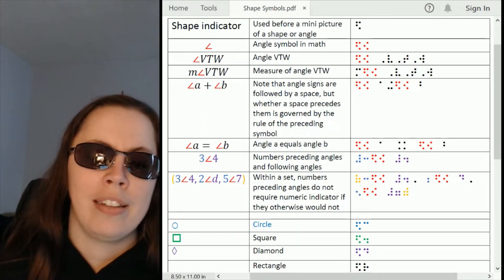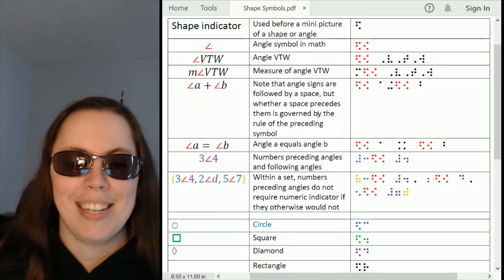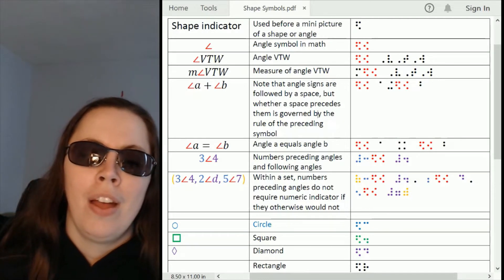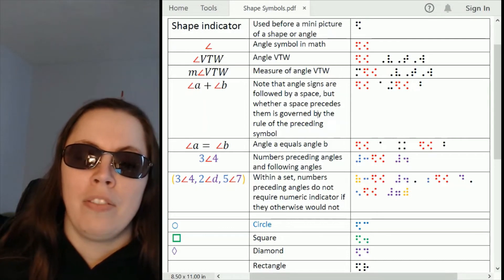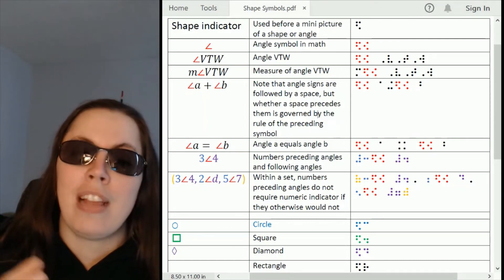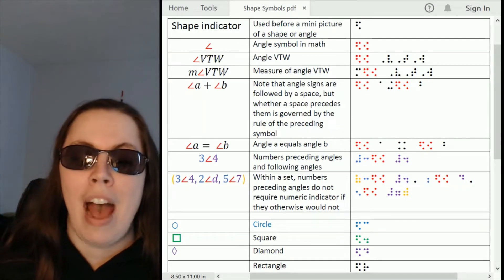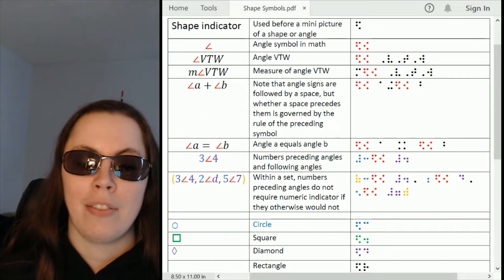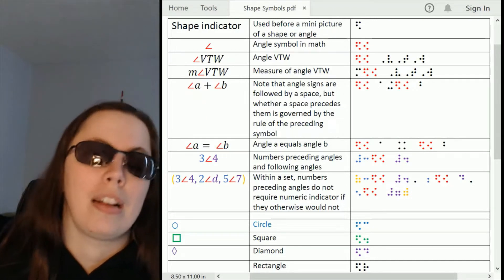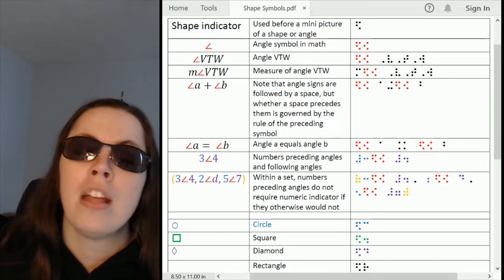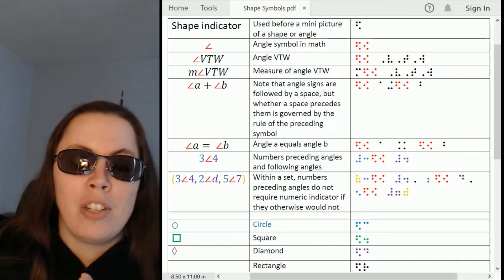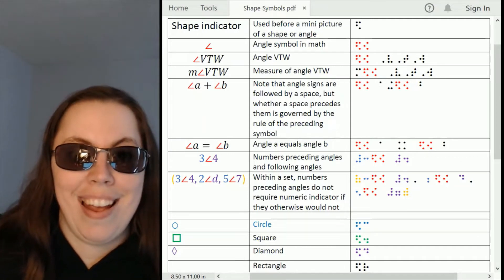Note that when there is a sign of comparison in the equation, it maintains its spacing. You can see that in angle A equals angle B, that we have angle space A because the measure or the label is separated from the angle sign. And then there's a space after A before the equal sign and after the equal sign before the next angle symbol. So it's not that the thing before it always touches the angle symbol, just that it can if it should.